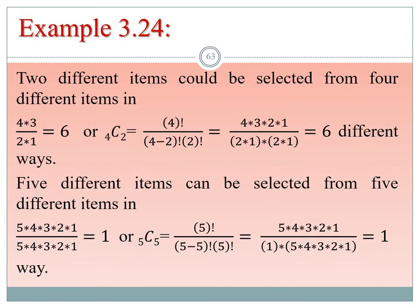Additional combination examples: 2 different items selected from 4 different items = 4C2 = 6. Five different items selected from 5 = 5C5 = 1. An important property: nCr = nC(n−r). For example, 5C2 = 5C3 = 10, and 10C7 = 10C3 = 120.